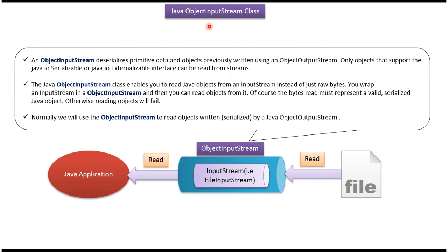In this video tutorial I will cover ObjectInputStream. Here you can see a file and a Java application. A Java application can use ObjectInputStream to read primitive data types and objects which were previously written using ObjectOutputStream into this file.